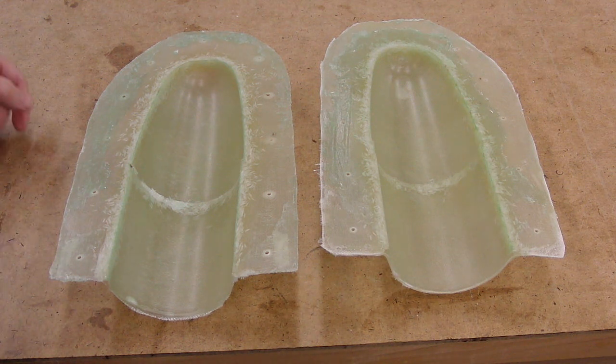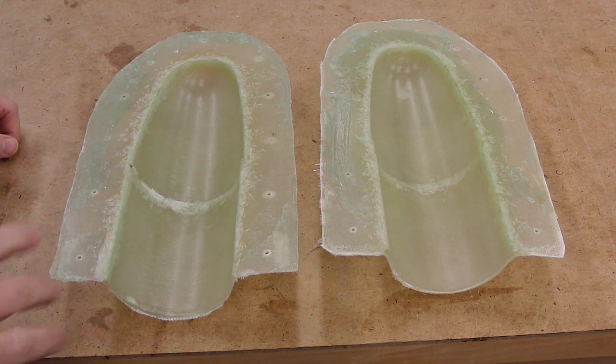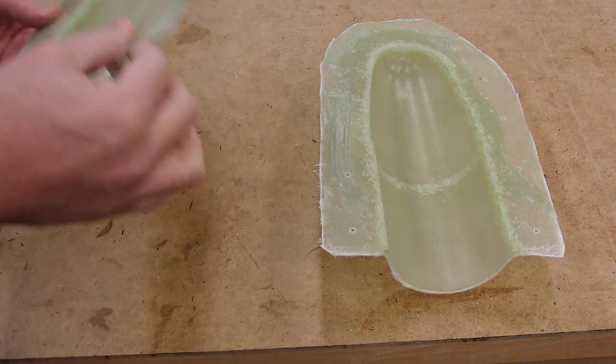And once you've got them separated, which it should do relatively easily, you have your two mold halves.